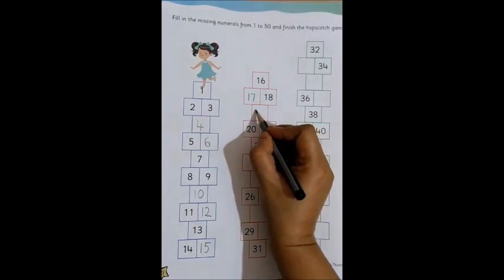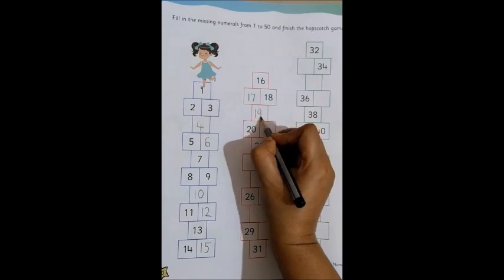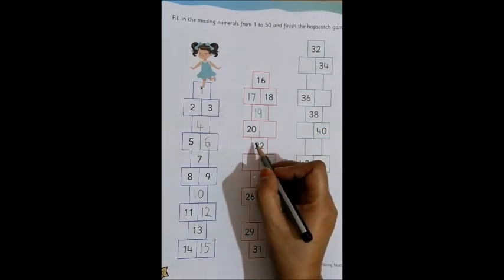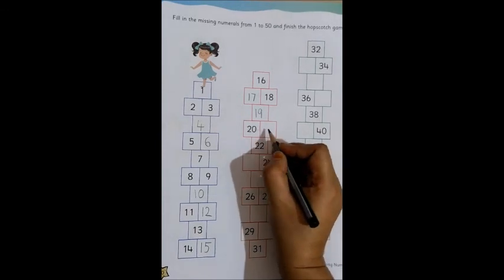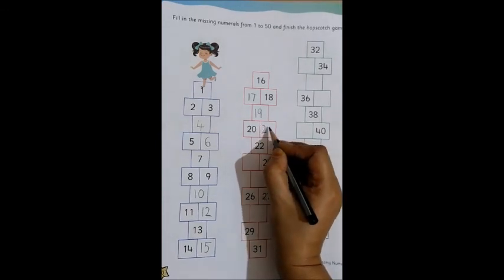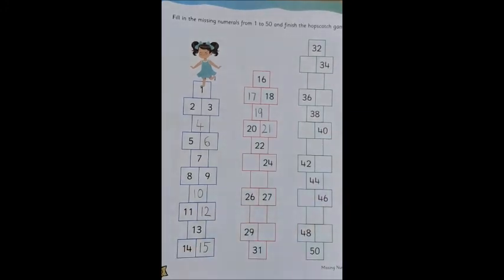18 is there, we write 19. 1, 9, 19. 20 is there, then the next number will be what? 21. So, we write 21. 2 and 1, 21.